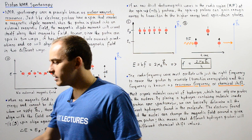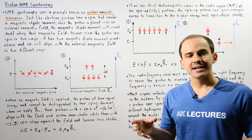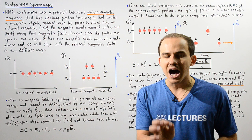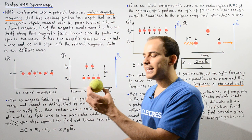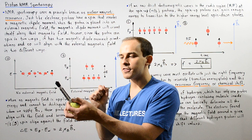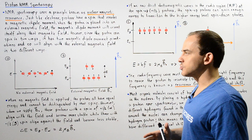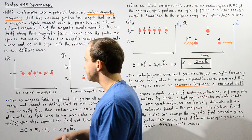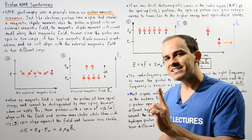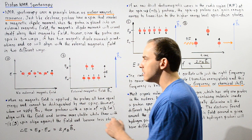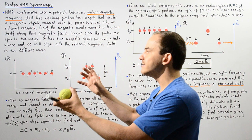Any time we take a magnetic dipole moment and place it inside an external magnetic field, that external magnetic field will align the magnetic dipole moment along the same axis as the field. In the absence of any external magnetic field, as shown in diagram A with six different protons, the magnetic dipole moment of each proton is oriented in a random direction, and the energy of each proton is exactly the same.